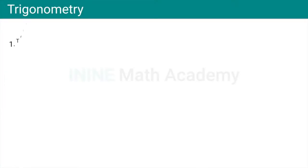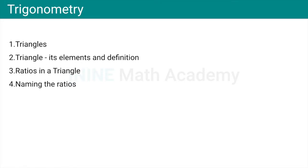We will start with introduction to various triangles that are relevant from Trigonometric point of view. Its elements and defining a triangle, ratios in a triangle and we will try to name the ratios. We will try to understand the relationship between those ratios of the triangle and we will start manipulating the ratios. Manipulation of ratios basically mean solving various trigonometric problems.